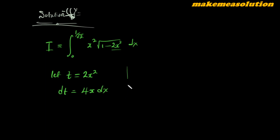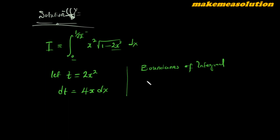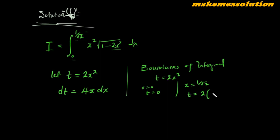It also means that the boundaries of the integral will change. Anytime you're making a substitution into an integral, make sure that you observe the changes on the boundaries. We have t equal to 2x squared, so when x equals 1 over root 2, t equals 2 times (1 over root 2) squared, which gives 2 over 2, which is 1. So the boundaries change from 0 to 1/√2 into 0 to 1.